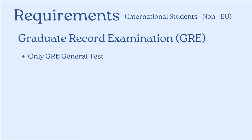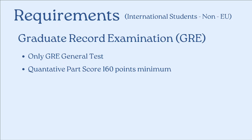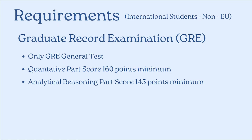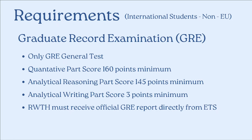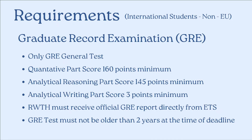Let's have a look at the GRE requirements. To apply for Automotive Engineering at RWTH Aachen, you need the GRE General Test where you must score at least 160 points in the quantitative part, at least 145 in the analytical reasoning part, and at least 3 in the analytical writing part. You must ask ETS to send your official GRE report directly to RWTH Aachen, and the GRE score must not be more than two years old at the time of the deadline.